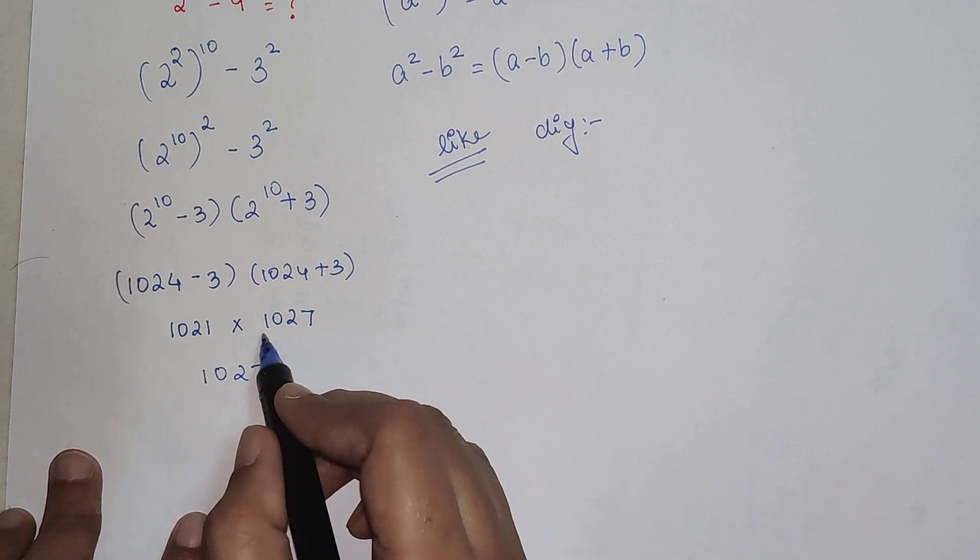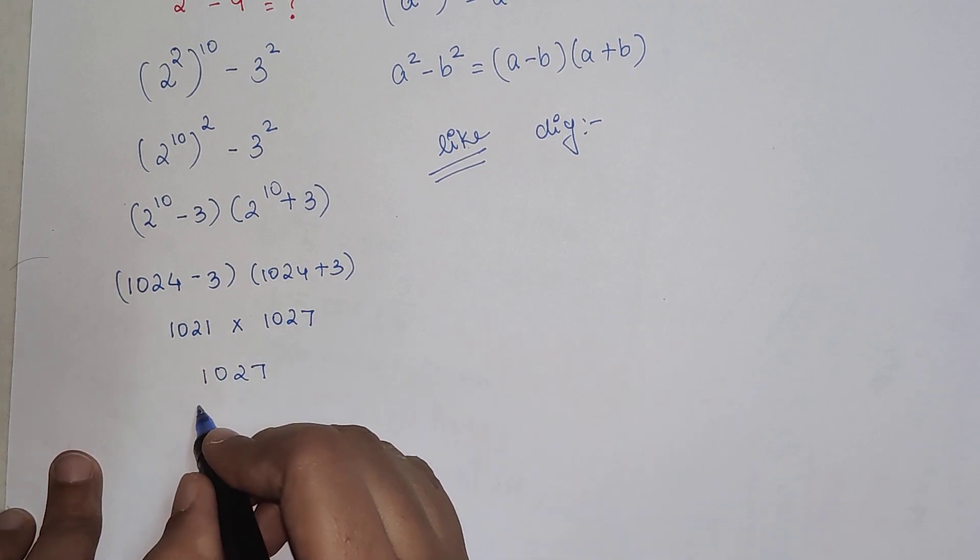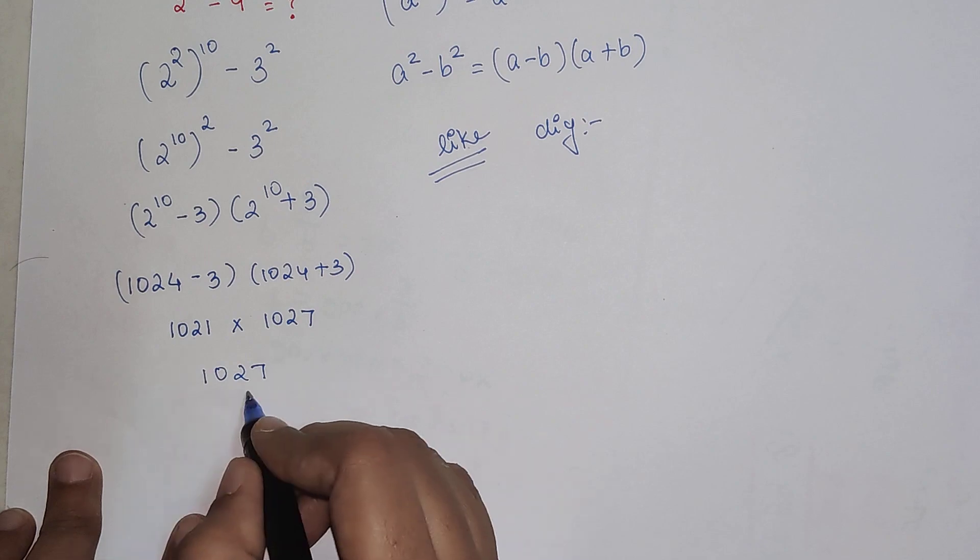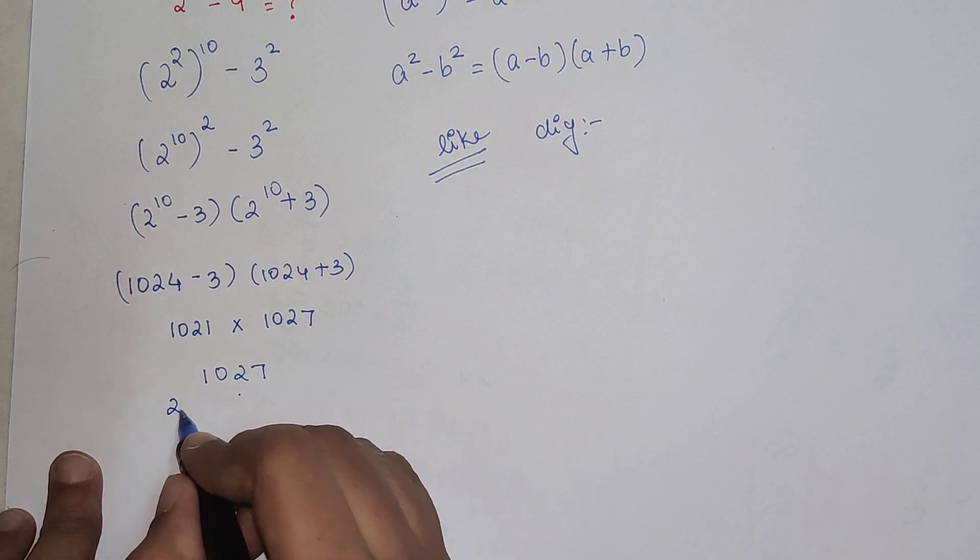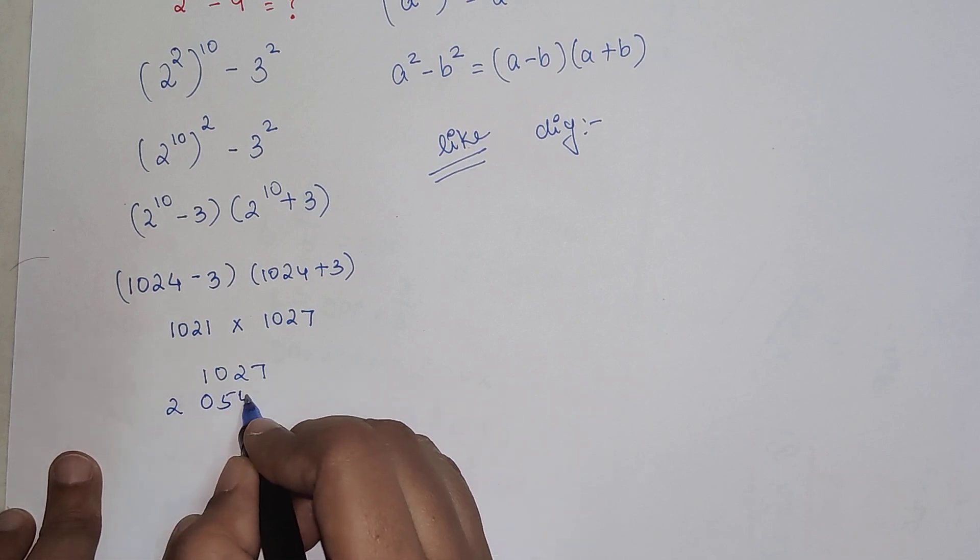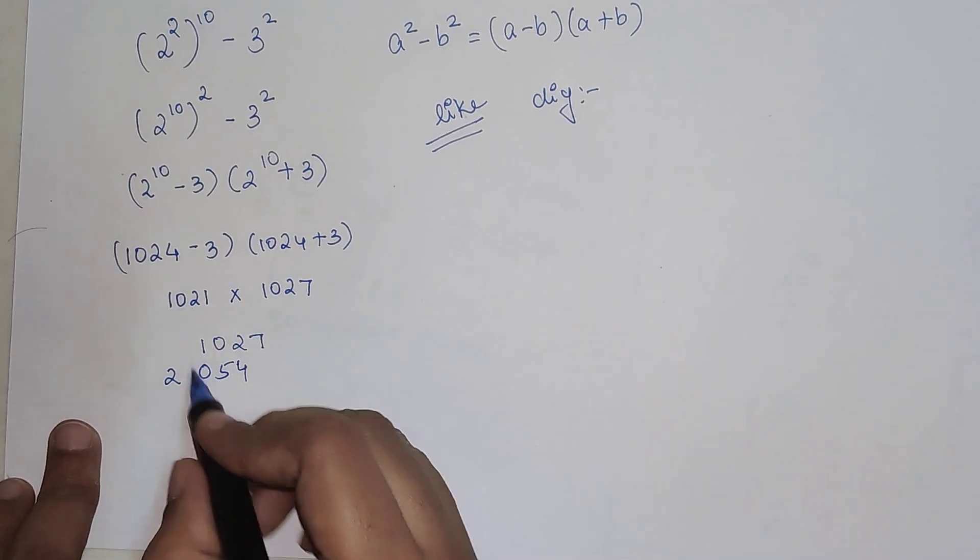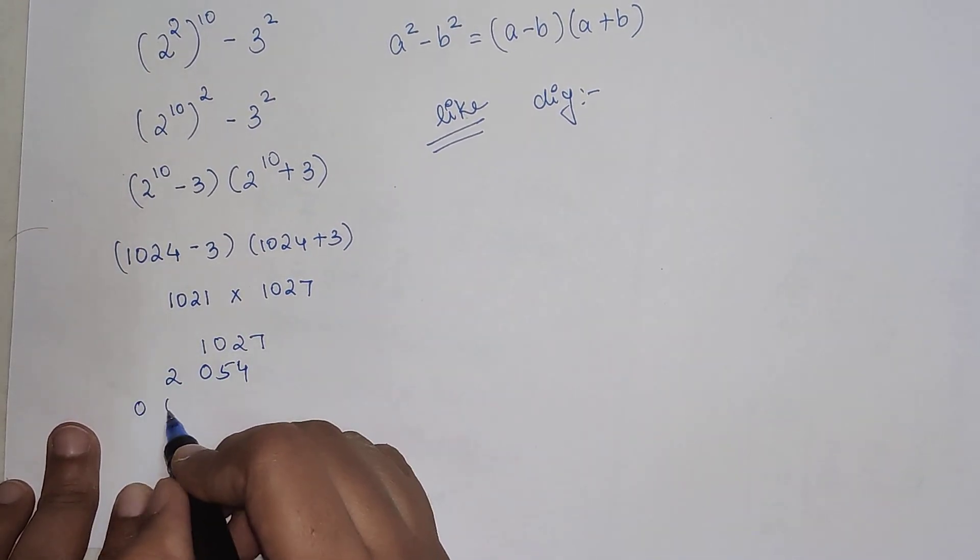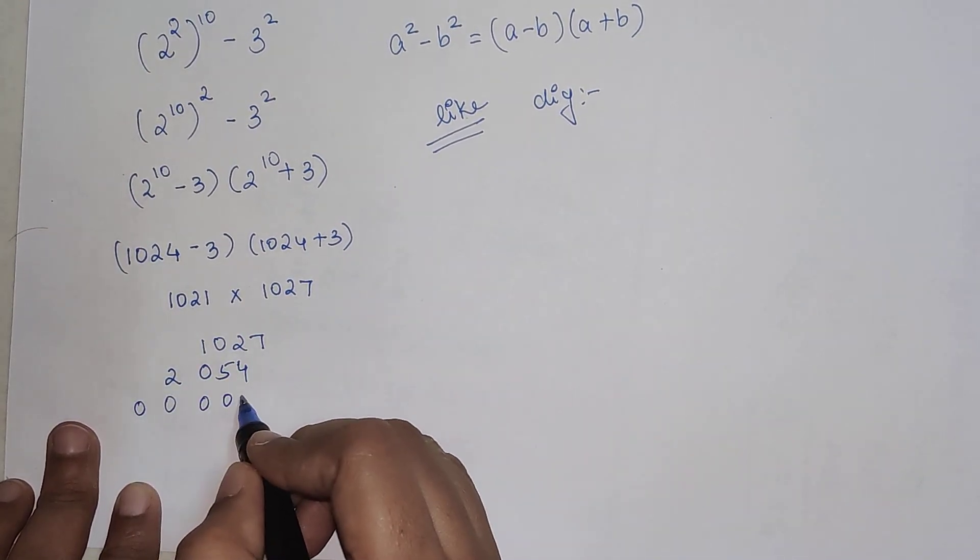2 when multiplied by 1027 gets you 2054. 0 when multiplied gets you 0000.